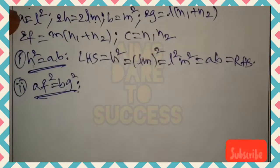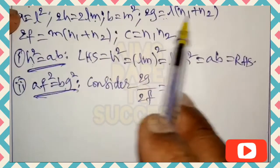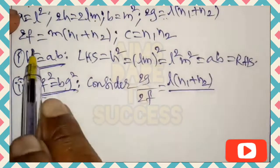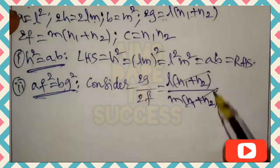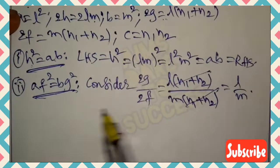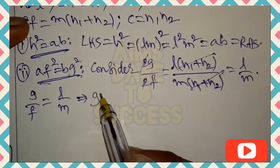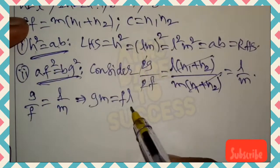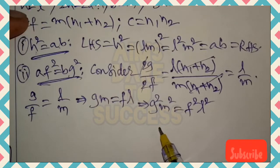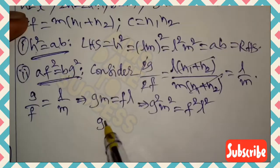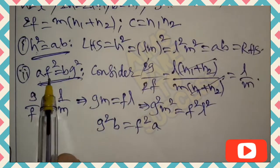For the second part, af² = bg²: consider the ratio 2g / 2f. Substituting, 2g = l(n₁+n₂) and 2f = m(n₁+n₂), so (n₁+n₂) cancels and g/f = l/m. Cross-multiplying: gm = fl. Squaring both sides: g²m² = f²l². Since m² = b and l² = a, we get bg² = af², i.e., af² = bg². Second part proved.